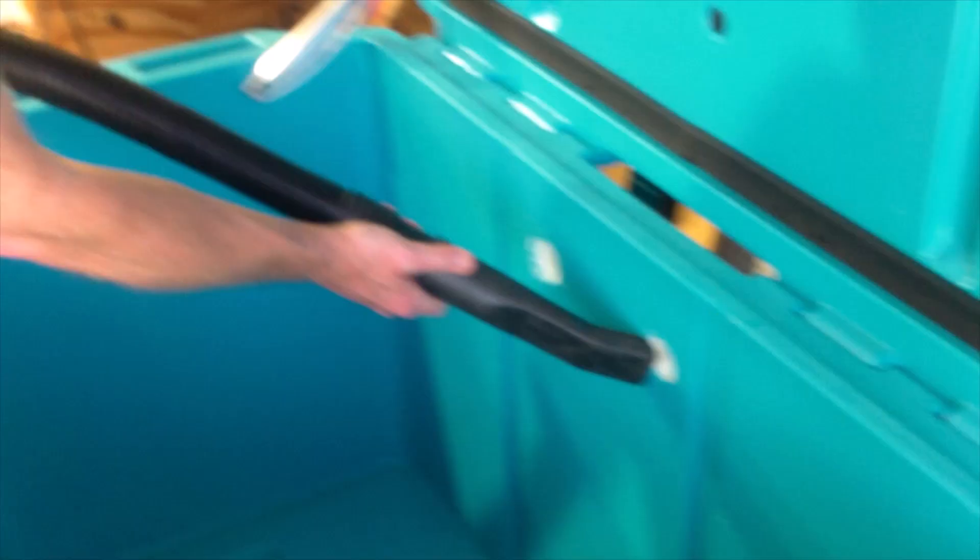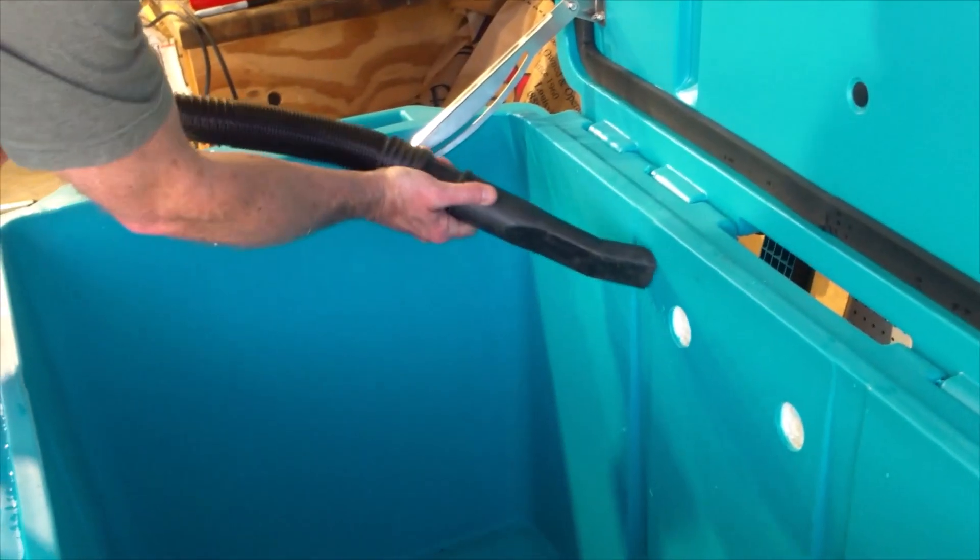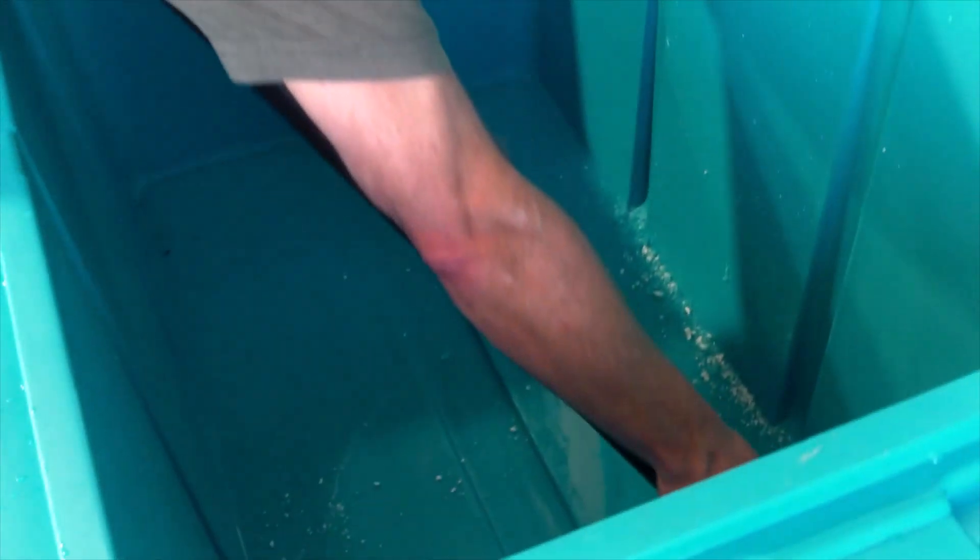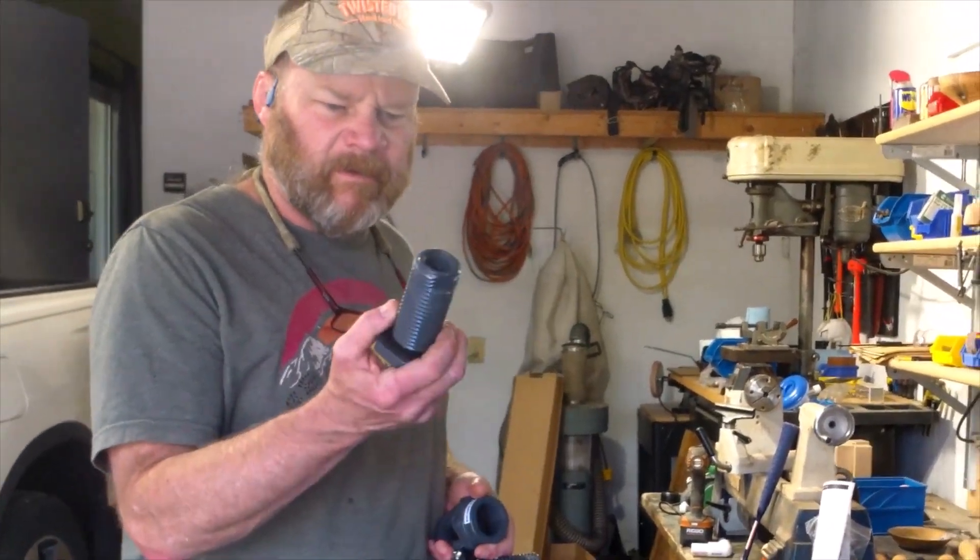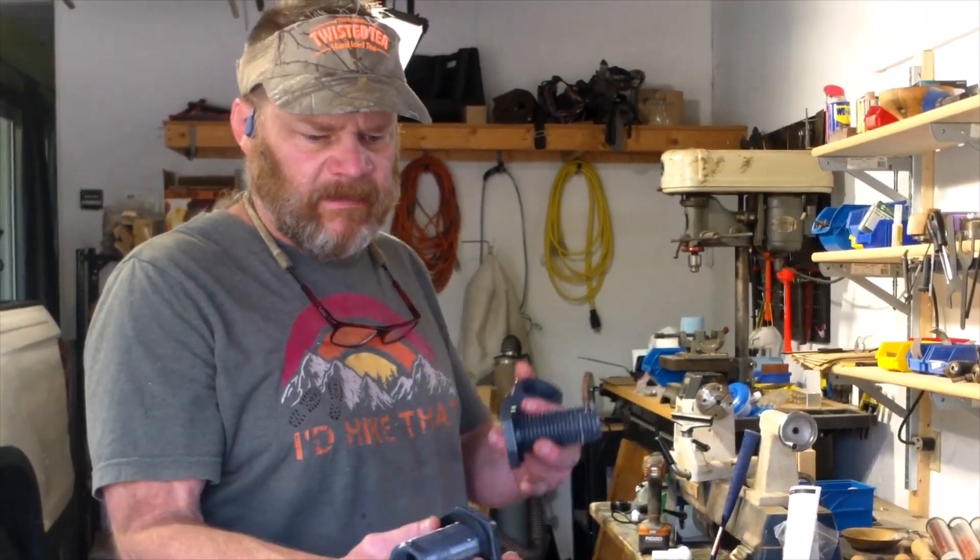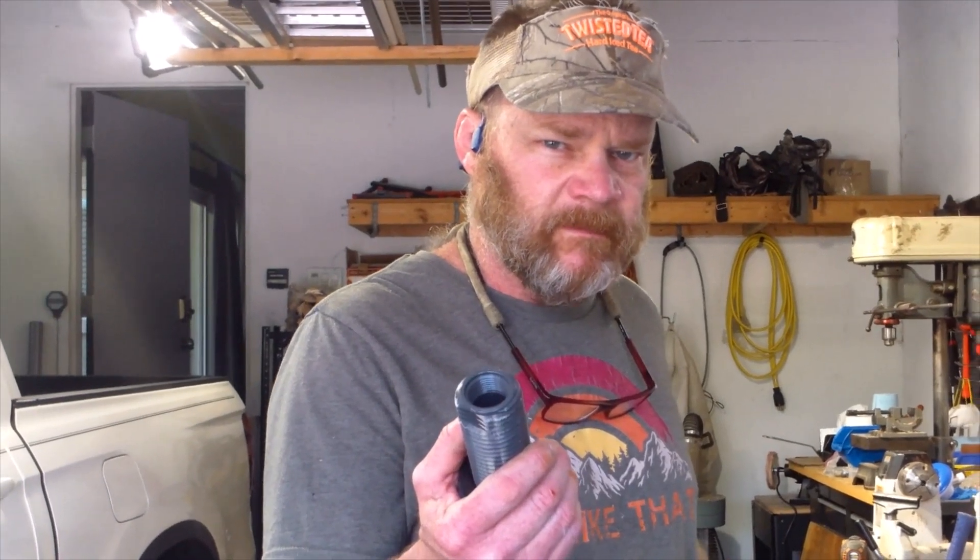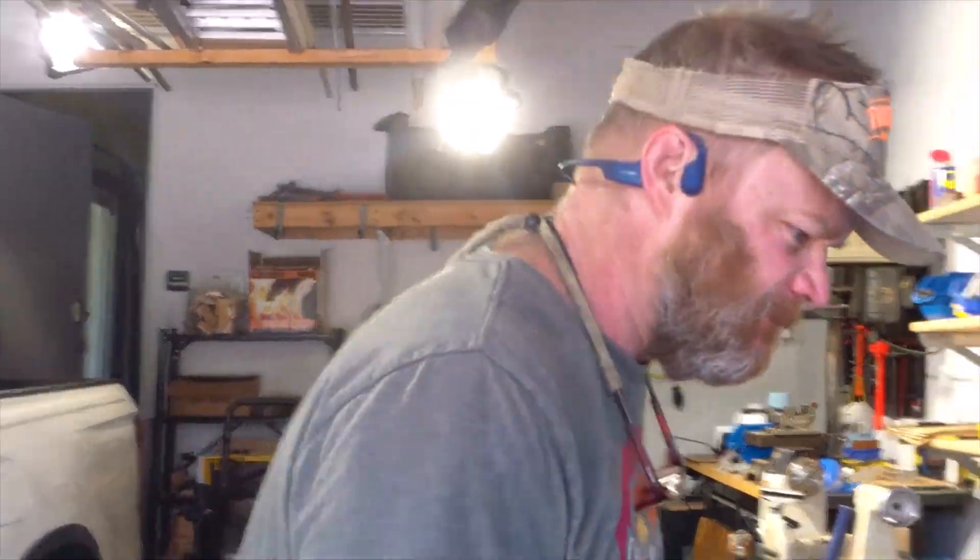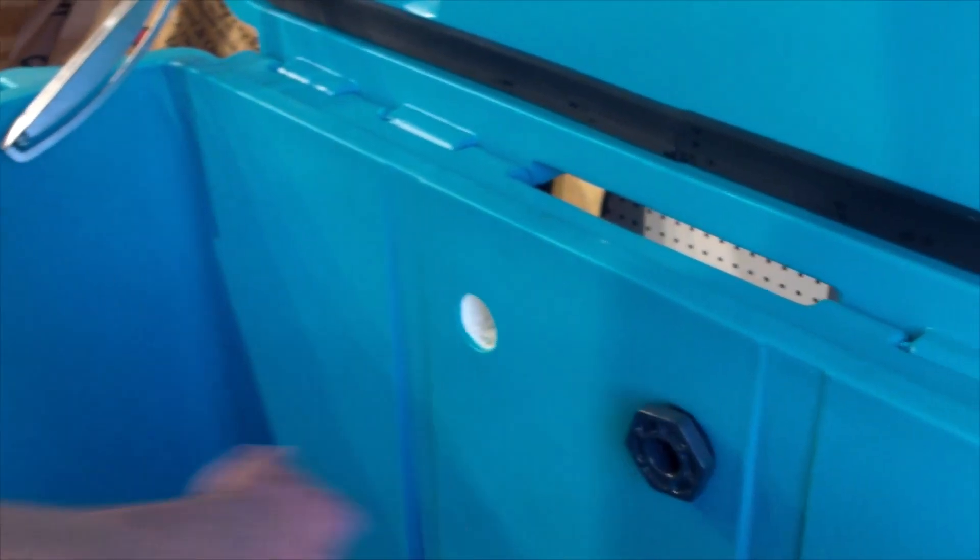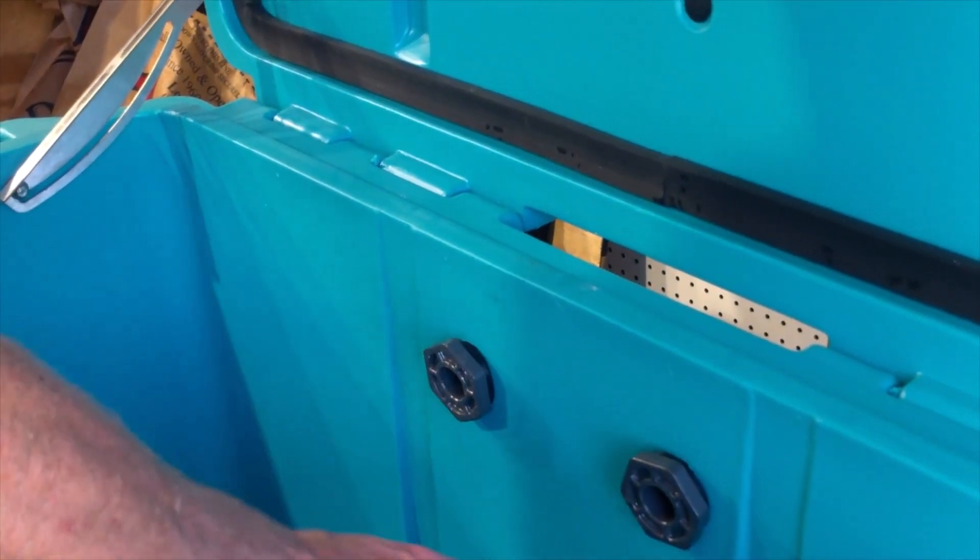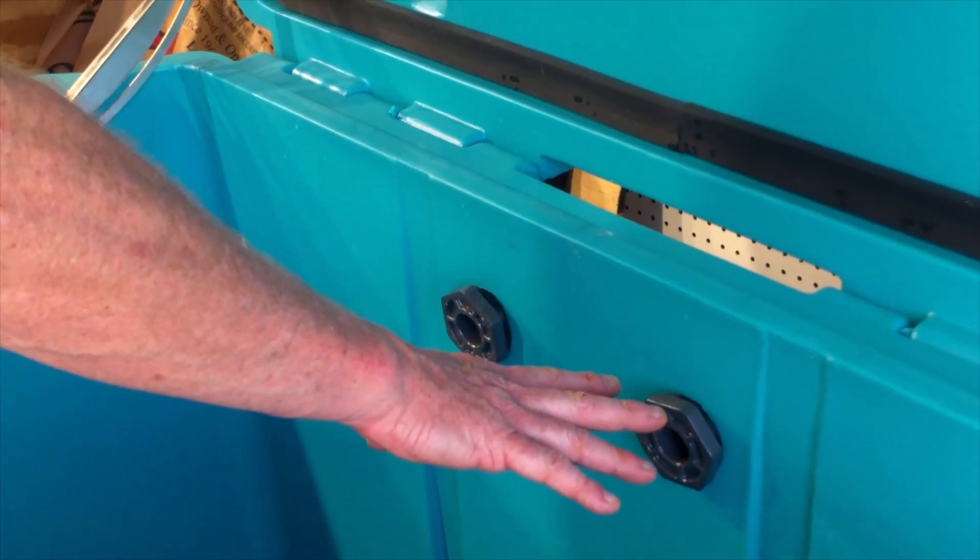Now we got our holes drilled. We're going to put our bulkhead adapters in. The gasket goes on the inside. These are reverse threaded, so when you tighten them they have to go the opposite, lefty tight.